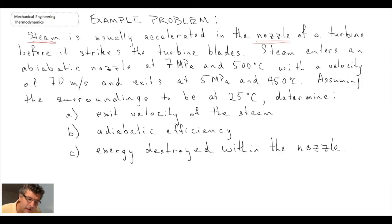It tells us that it is an adiabatic nozzle, which is important because that pertains to heat transfer. Now we're told that it enters, so this is the initial state: 7 megapascals, 500 degrees C, 70 meters per second, and it exits at 5 megapascals and 450 degrees Celsius.